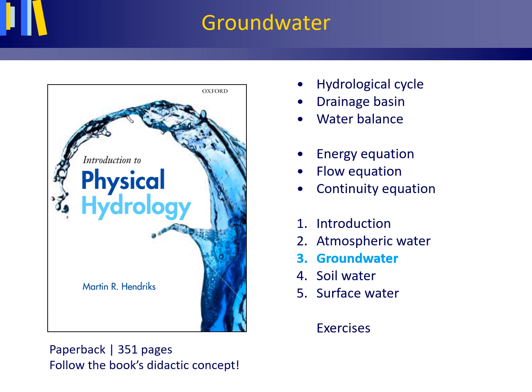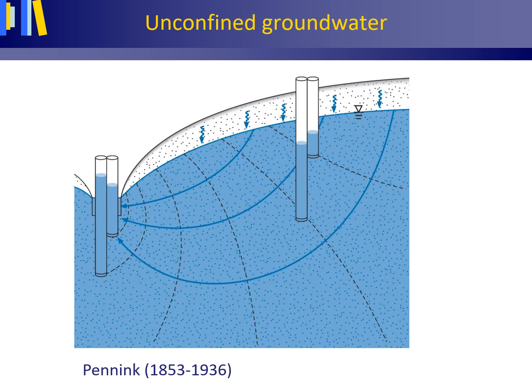We will continue with sections 3.11 through 3.14 on groundwater. In an isotropic, unconfined aquifer, precipitation-induced groundwater flow to a partially penetrating canal — a canal not incised to the top of a possibly lower-lying impermeable layer — occurs along curved pathways or streamlines.